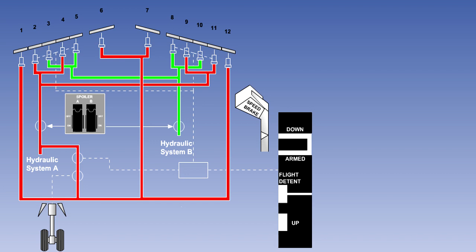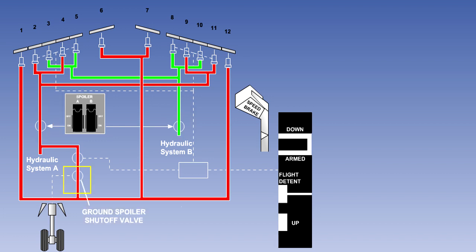Shown here is a typical spoiler control set-up. To provide redundancy, two of the flight spoilers on each wing are powered by one hydraulic system, with the other two being supplied by a different system. There are hydraulic shut-off valves in the lines to the flight spoilers, controlled by flight deck operated shut-off switches. There is a ground spoiler shut-off valve, which is open when the aircraft weight is on the wheels and closed when it is not, thus ensuring that the ground spoilers operate only on the ground. There is also a ground spoiler control valve, which is under the control of the spoiler mixer. This valve will open and close to control the position of the ground spoilers in response to speed brake lever movement.